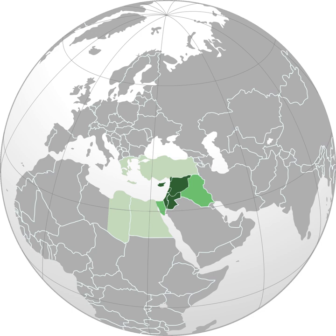The largest religious group in the Levant are Muslims, and the largest cultural-linguistic group are Arabs, due to the Muslim conquest of the Levant in the 7th century and subsequent Arabization of the region. Other large ethnic groups in the Levant include Jews, Kurds, Turkmens, Assyrians, and Armenians. The majority of Muslim Levantines are Sunni, Alawi, or Shia Muslim. There are also Jews, Christians, Yazidi Kurds, Druze, and other smaller sects.